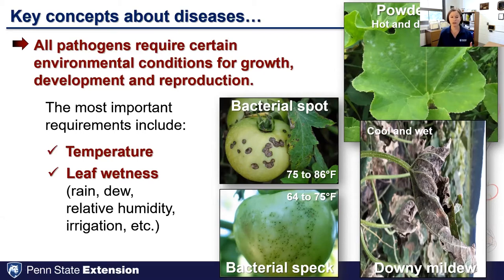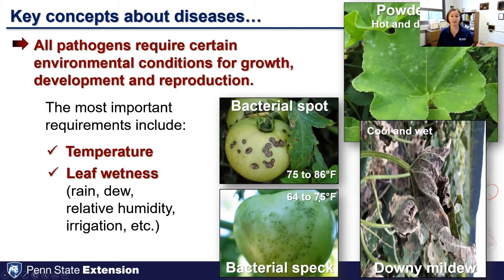Depending on temperatures and the amount of leaf wetness, it can really vary what diseases we see or anticipate. For example, in Pennsylvania in a warmer summer we may see more bacterial spot on tomato, but in a cooler summer (64–75°F) we may see more bacterial speck. When it's hot and dry, we may see more powdery mildew, whereas when it's cool and wet, downy mildew may be more of an issue on cucurbits.